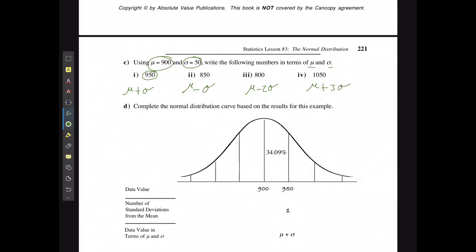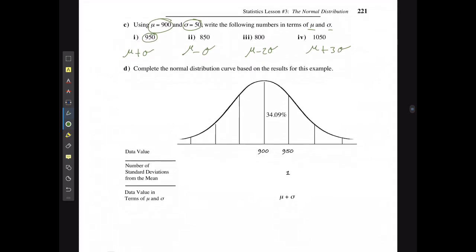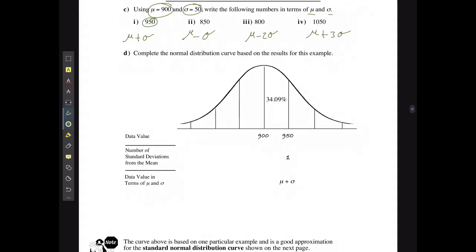If I'm putting this into the data values, I know that right in the center of this curve is going to be that average, 900. Then one line up is going to be 950, then 1000, then 1050. On this side it's going to be 850, 800, and 750.